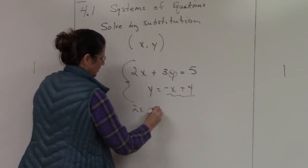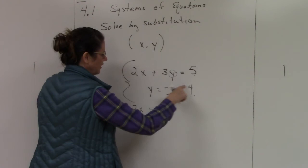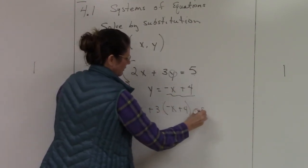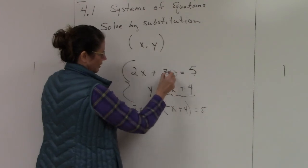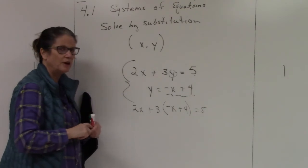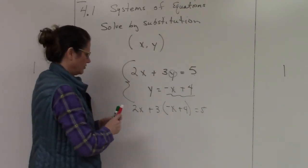It's going to be 2x plus 3 times this value right here, and then equals 5. So all I did is I took out this y and I plugged in this y. Now you have a straight equation, one unknown, and you're able to solve for it.